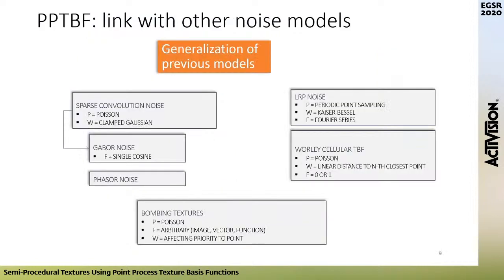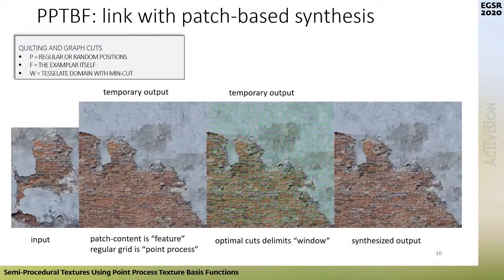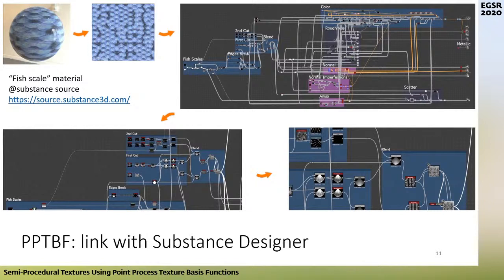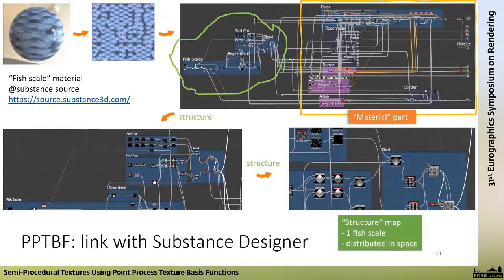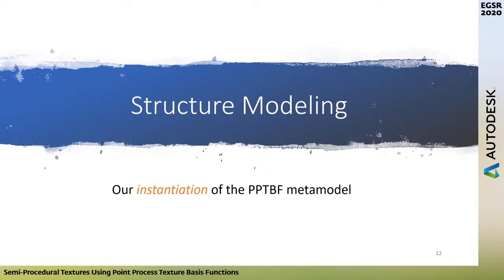Our PPTBF model can be seen as a generalization of previous noise models. For quilting and graph cut models, the point process can be seen as the regular or random underlying grid, the feature function is the exemplar itself, and the window function is a smart function that tessellates the domain with a min-cut. Looking at how artists design appearance in Substance Designer, we can see they have a material part of the node graph, starting with a structure map — like a fish scale — that is then distributed in space, as in our model.